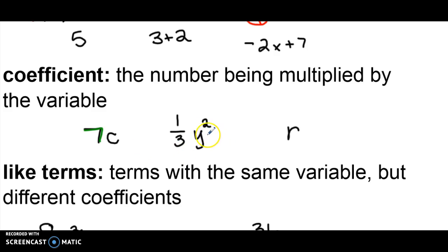Now when I look at one-third Y squared, that's a little tricky because you might say, well, I have this exponent here, so is that the number? Well, no, because our variable is not being multiplied by two. The number that it's being multiplied by is the one-third.